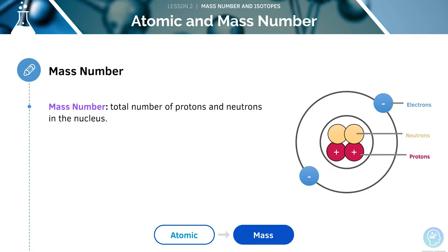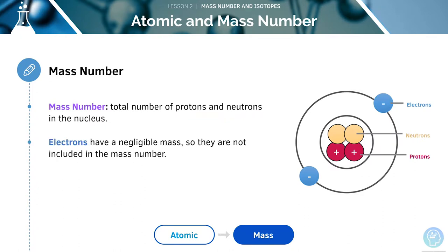The mass number is the total number of protons and neutrons in the nucleus. As we discussed in the last video, electrons have a negligible mass, which means that they're not usually included in the mass number.